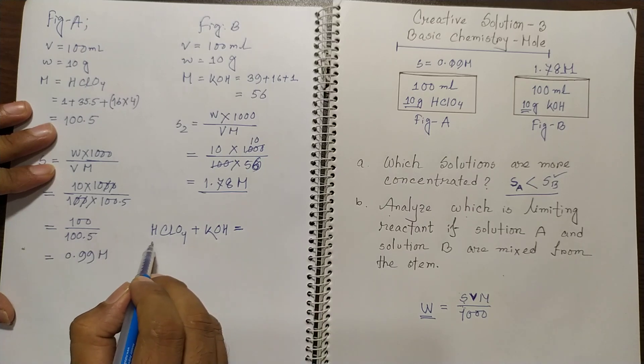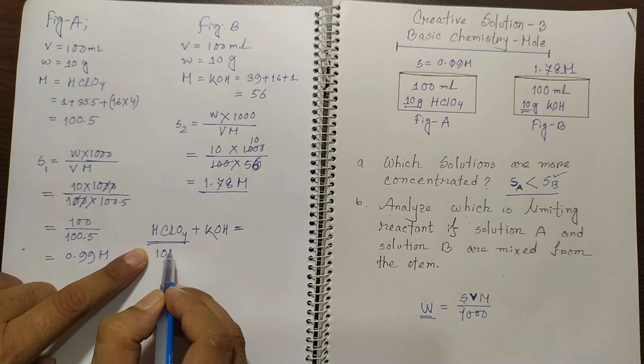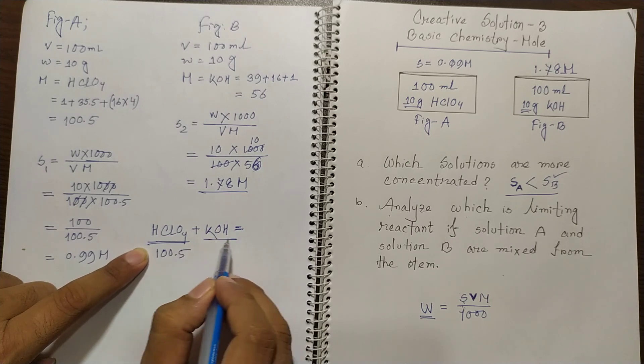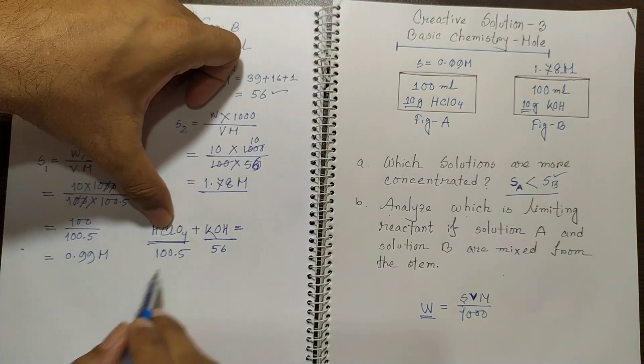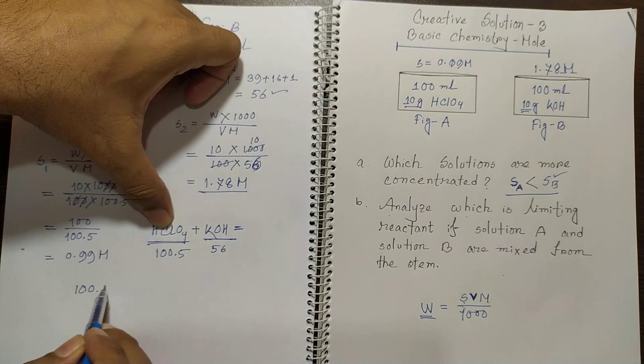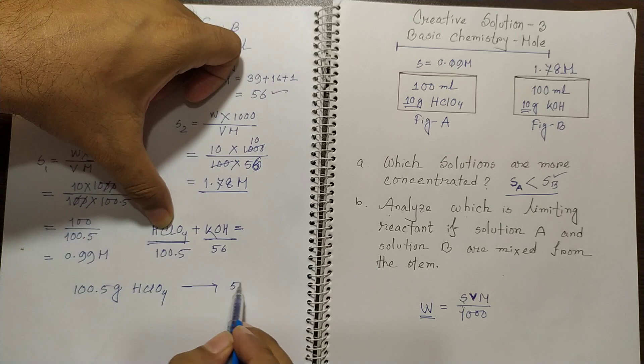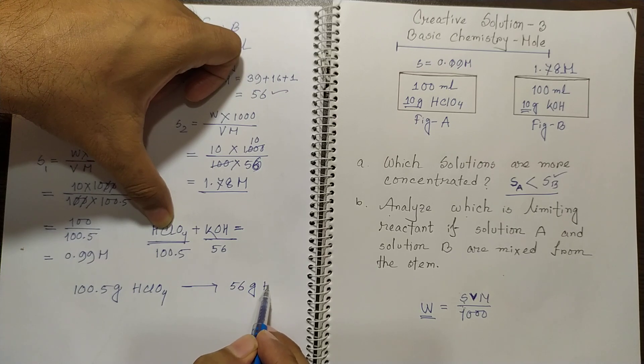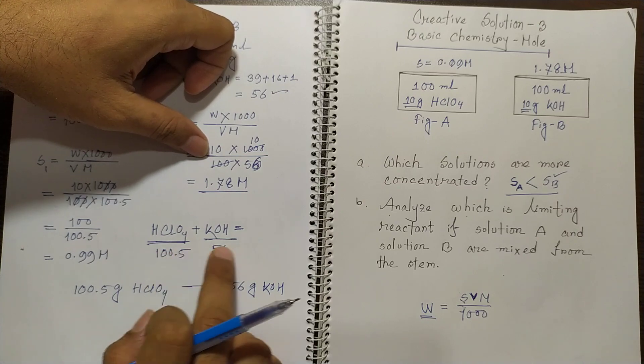So you think that HClO4 is reacting with potassium hydroxide. Now if you think that the molecular mass of perchloric acid we just got 100.5 and you got 56 from KOH. So we see that 100.5 gram HClO4 is reacting with 56 gram potassium hydroxide. So this we got from the reaction.